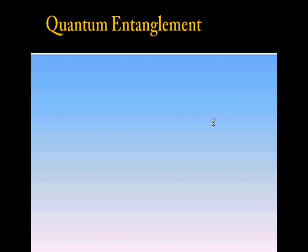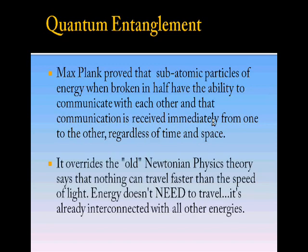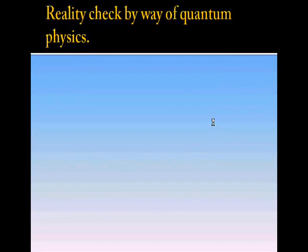During that time, another interesting concept was floated called quantum entanglement. A well-known scientist named Max Planck proved that subatomic particles of energy, when broken in half, have the ability to communicate with each other, and that communication is received immediately from one to the other, regardless of time and space. So it overrides the old Newtonian physics theory that nothing can travel faster than the speed of light. Energy doesn't need to travel—it's already interconnected with all other energies.